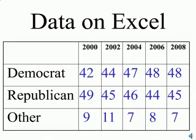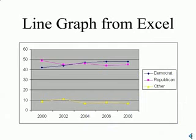And here's what we will get. The blue line represents the Democrats showing a trend upward. The red line represents the Republicans showing a slightly lower trend. And at the bottom we see the votes for other.